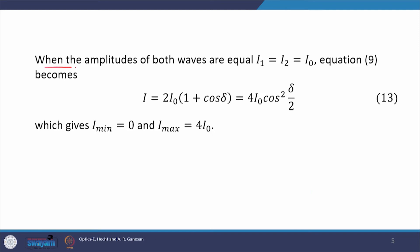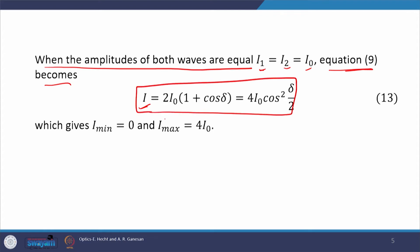Now consider the special case when I₁ = I₂ = I₀. Substituting into equation 9, the resultant irradiance becomes equation 13: I = 4I₀ cos²(δ/2). In this case, the maximum irradiance occurs when δ/2 = 0 or δ = 0, giving I_max = 4I₀. The minimum irradiance is 0.